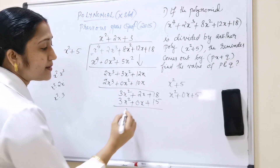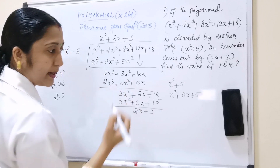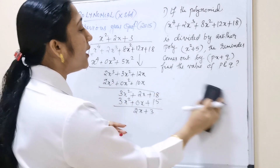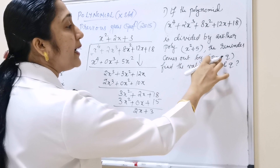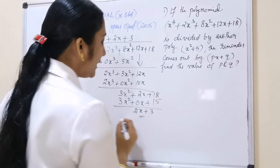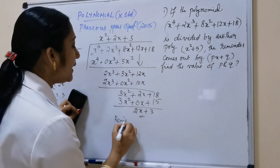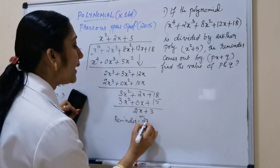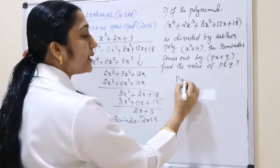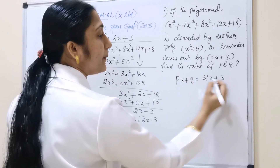After subtracting, the remainder is 2x + 3. The condition states that the remainder comes out as px + q, so we have px + q = 2x + 3.